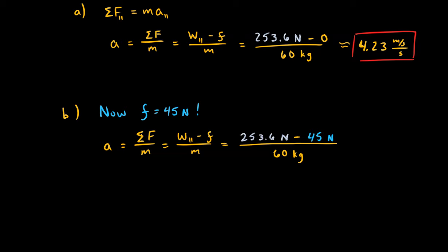Okay, so we have the parallel component of the weight minus the force of friction, and it's taking away from that force because it's pointing in a different direction. It's counteracting it. Divided by the mass of 60 kilograms, and when we plug that in, we get to a final answer of 3.48 meters per second per second, or meters per second squared.